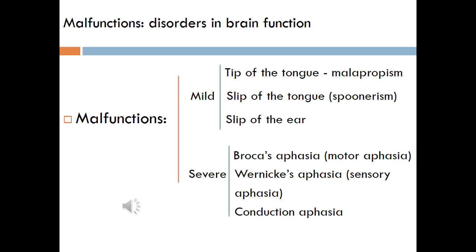There are two kinds of malfunctions in the brain — that is, disorders in the brain. The mild one includes the tip of the tongue, slip of the tongue, or slip of the ear. While the severe ones result in damage to Broca's area, Wernicke's aphasia, and conduction aphasia. We will discuss each one in the next slide.